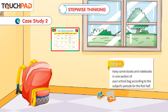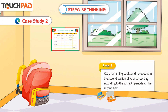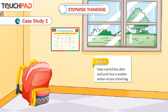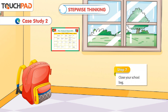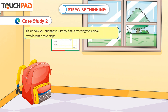Step 4: Keep some books and notebooks in one section of your school bag according to the subject's periods for the first half. Step 5: Keep remaining books and notebooks in the second section of your school bag according to the subject's periods for the second half. Step 6: Keep a pencil box, diary, and lunch box in another section of your school bag. Step 7: Close your school bag. This is how you arrange your school bag every day by following the above steps.